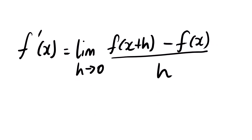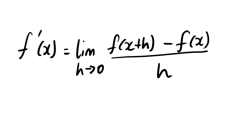This is the equation we are going to use. This symbol represents the derivative of a given function, which is f prime equals the limit as h approaches 0. It is given by the function whereby the input is x plus h, minus the original function f, all over h. This is the equation you are going to use to determine the derivative.